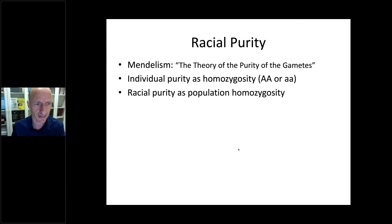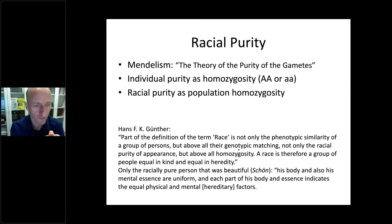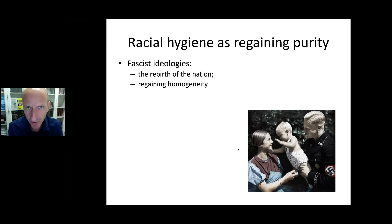Individual purity was extended to the entire population: racial purity or population purity was the state where the entire population was homozygous with identical genes. Notice that purity becomes uniformity — this is not a trivial move. Here is a quote from Hans F.K. Günther, perhaps the most influential racial writer of the period: 'Part of the definition of the term race is not only the phenotypic similarity of a group but above all their genotypic matching — not only racial purity of appearance but above all homozygosity.'